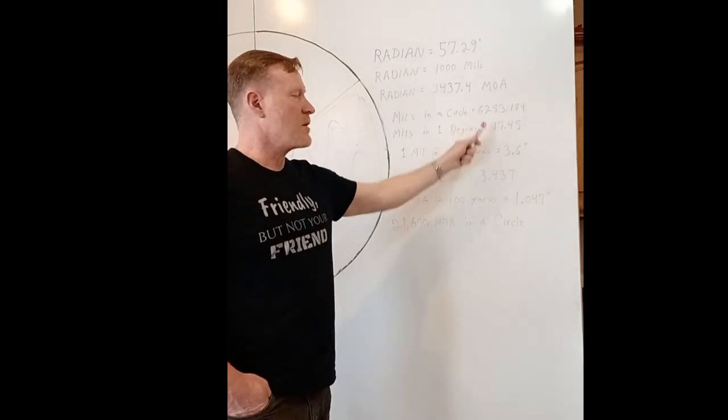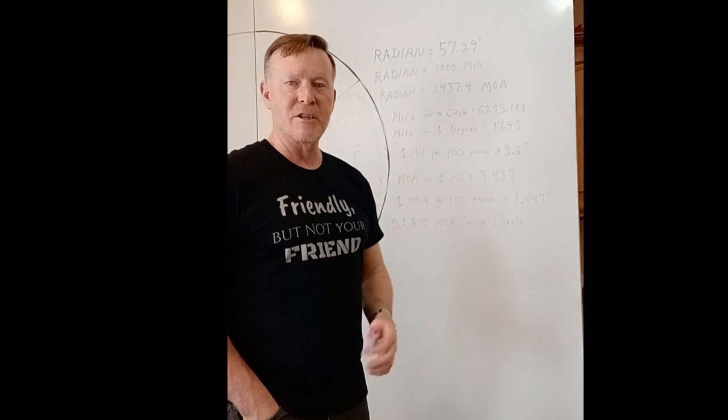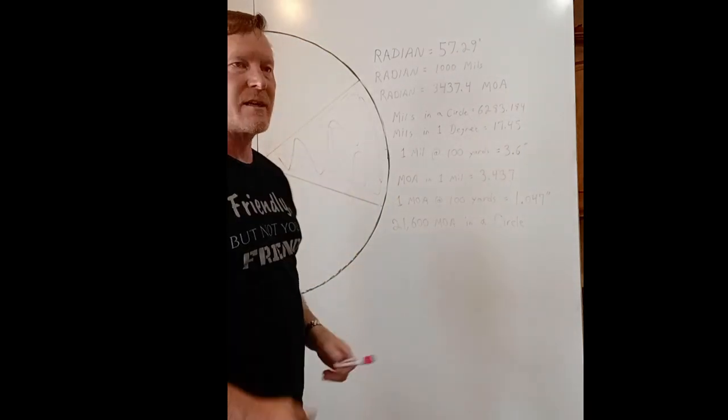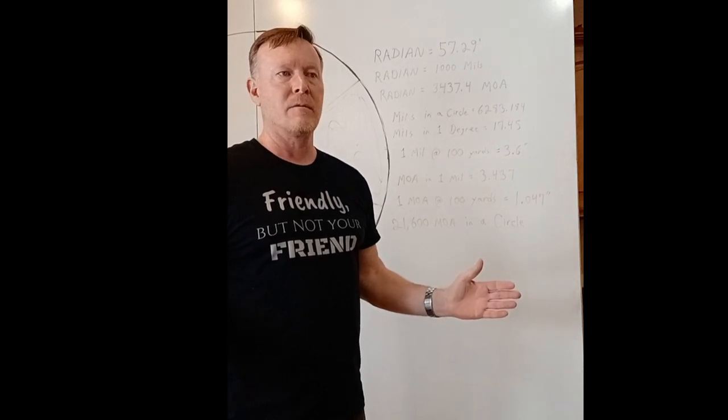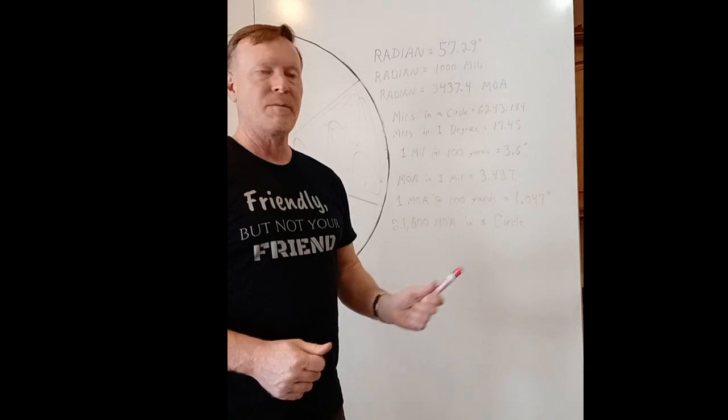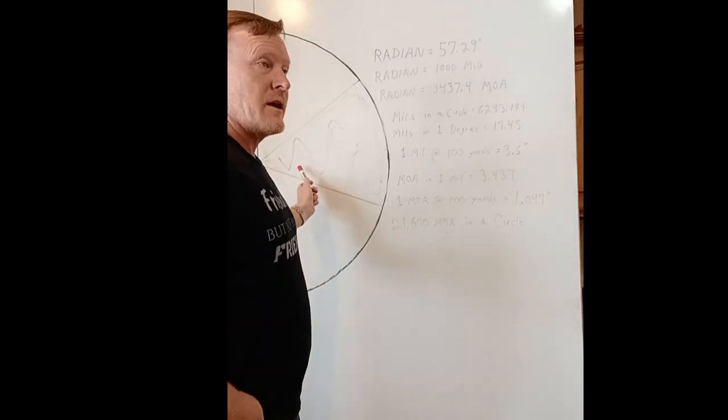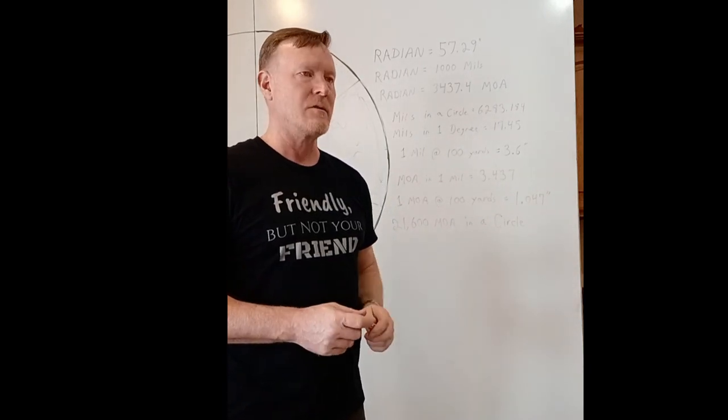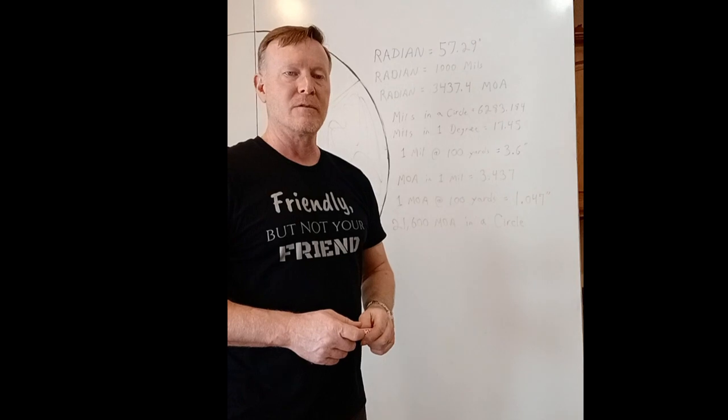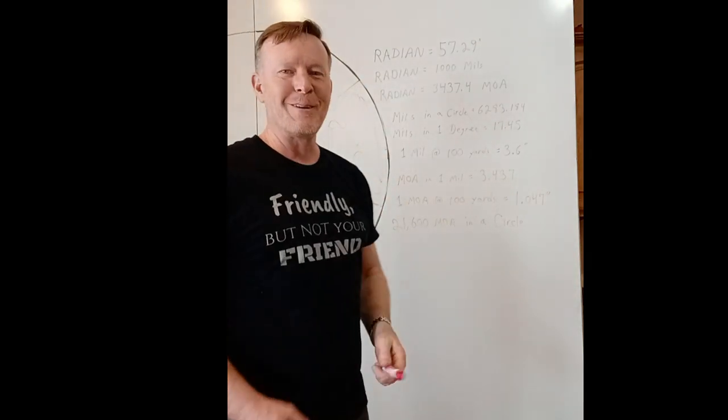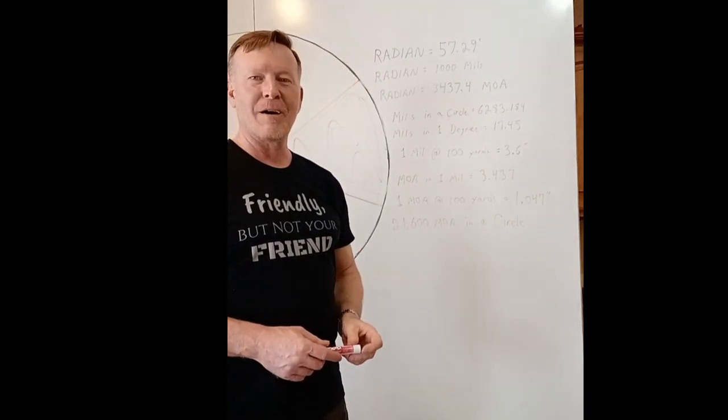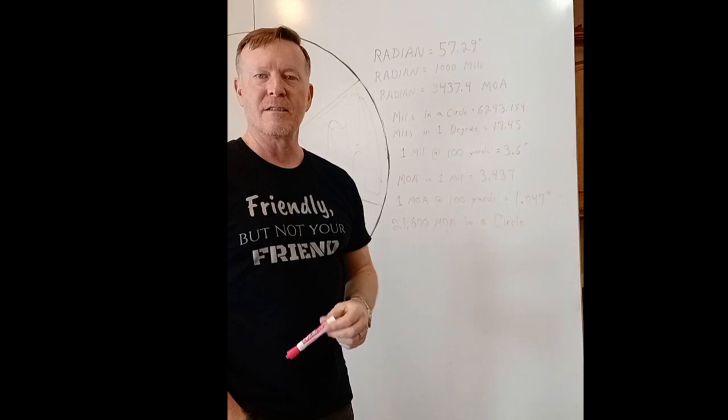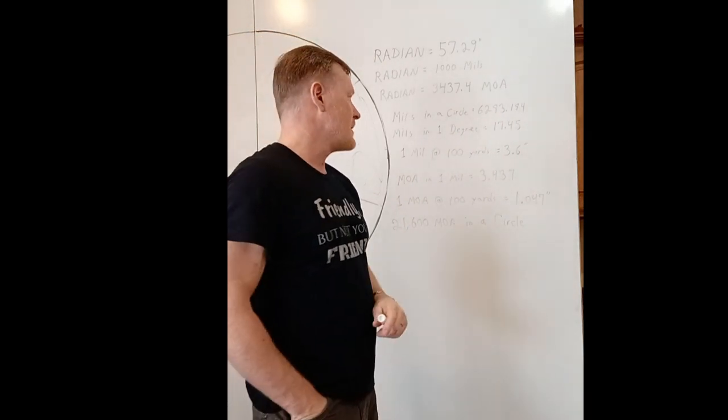And if somebody wants to do the math and argue that there's actually 6,400 mils in a circle and not 6,283, it's real easy to prove that. If you just take a circle, say the circle is 2,000 meters in diameter, right? So that's 1,000 meters radius. All you have to do then is, okay, if the radius is 1,000 meters, you already know that one mil is exactly one meter at 1,000. One mil is one meter at 1,000 meters. Okay. So we know that. So now tell me how many meters are in the circle using pi, 3.141592. And you're going to come up with, there's 6,283.184 meters in that circle that has a diameter of 2,000 meters, radius of 1,000 meters.